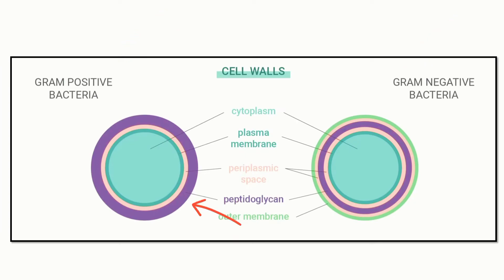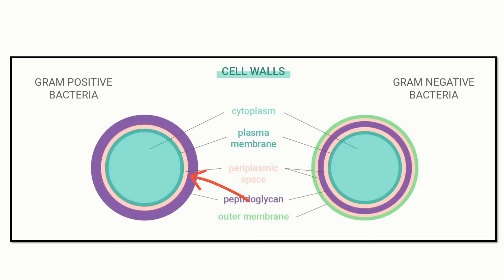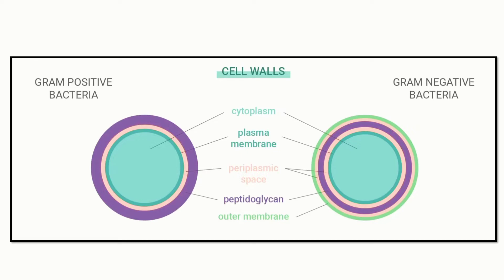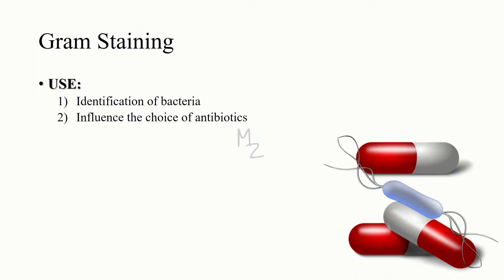Looking at the gram positive bacteria cell wall, it has just a thick peptidoglycan layer, one plasma membrane, cytoplasm, and a periplasmic space. In contrast, the gram negative bacteria has cytoplasm and a periplasmic space but a thin peptidoglycan layer, and it has two membranes: the plasma membrane and the outer membrane. A link to a detailed video on bacteria structure is in the description.